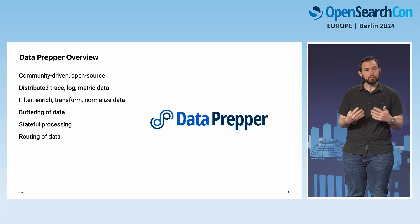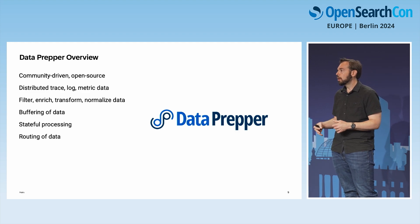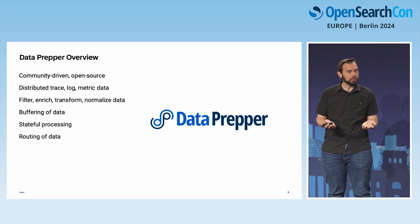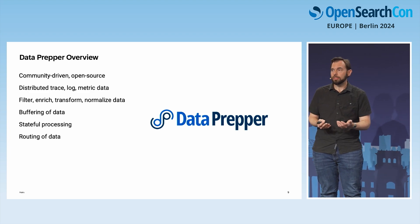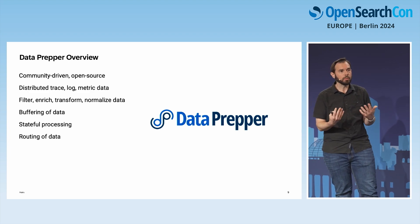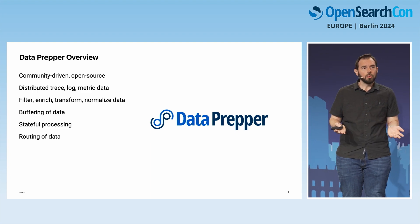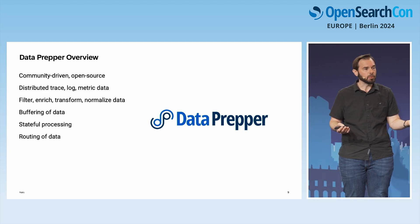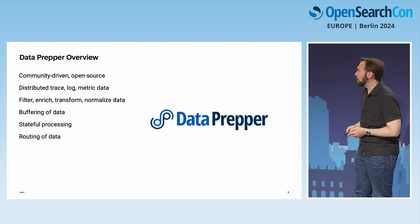DataPrepper has a set of processors you can use to filter, enrich, normalize, and prepare your data. It provides buffering capabilities and stateful processing, which comes into play a lot with trace pipelines because we want to accumulate spans. We can also route data — sending some data to one cluster and some to another, or for instance sending data to Amazon S3.